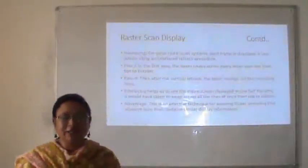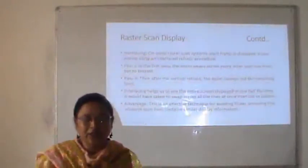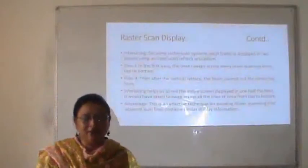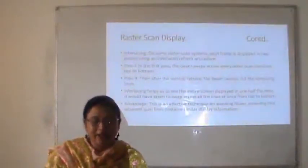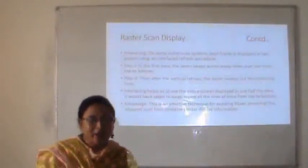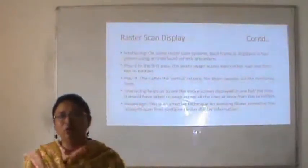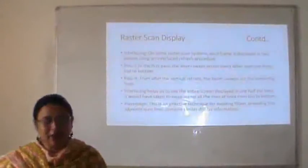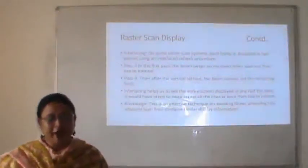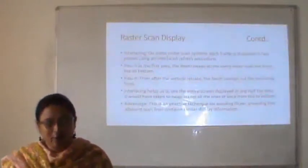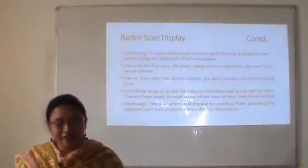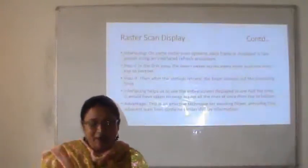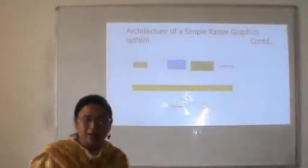Interlacing: on some raster scan systems, each frame is displayed in two passes using an interlaced refresh procedure. In the first pass, the beam sweeps across every other scan line from top to bottom — scanning lines 0, 2, 4, 6, 8, etc. In the second pass, after the vertical retrace, the beam sweeps out the remaining lines: 1, 3, 5, 7, 9, etc. Interlacing lets us see the entire screen displayed in one half the time it would take to sweep across all lines at once. The advantage is it is an effective technique for avoiding flicker, provided that adjacent scan lines contain similar display information.